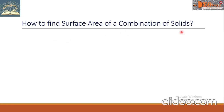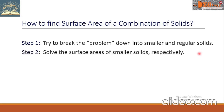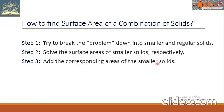We have some steps. Step one: try to break the problem down into smaller and regular solids. Step two: solve the surface areas of the smaller solids respectively. Step three: add the corresponding areas of the smaller solids.